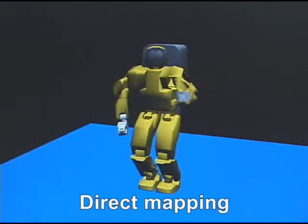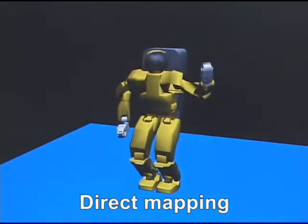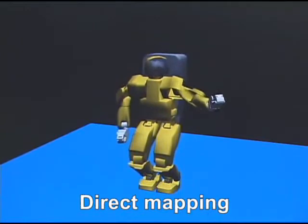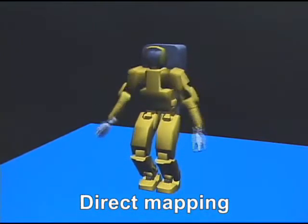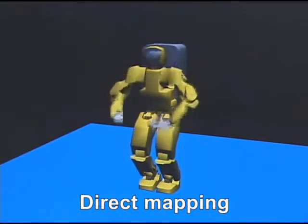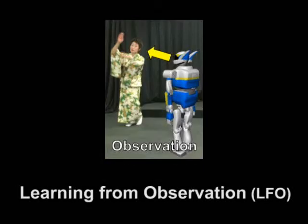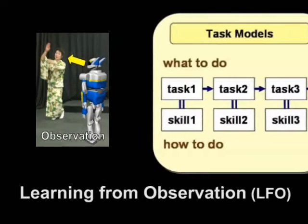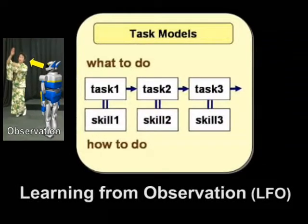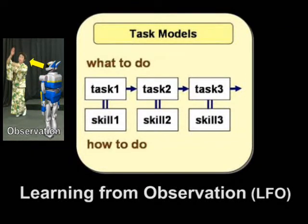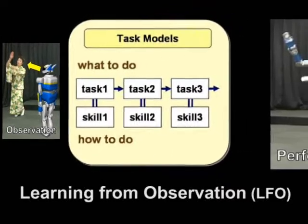Direct mapping from human joint angles to a robot causes falling down. To solve this problem, our LFO paradigm prepares task models, with which a robot recognizes what to do — which we call task — and how to do it — which we call skill — for successful dance imitation.